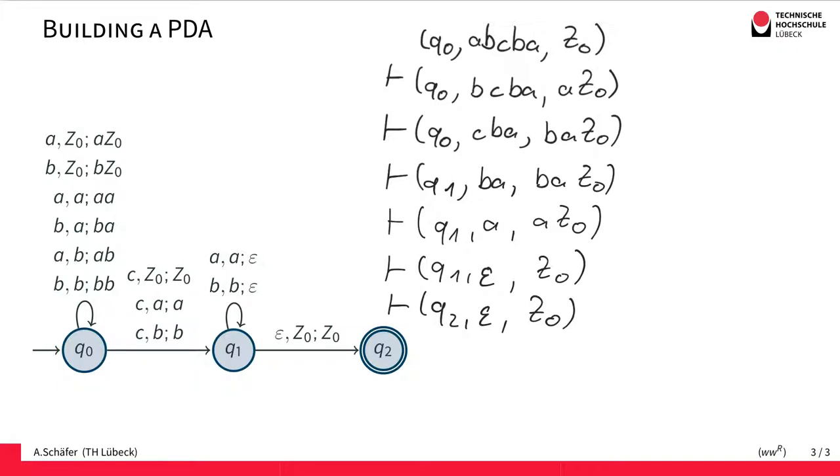And Q2 is an accepting state. So we accept the word. And what this PDA does. The first part is some kind of push. So here we push something on the stack. And the second part is a matching part. And that's something that's quite common for PDAs to be constructed like this. Can be the actual string. Can be kind of numbers.